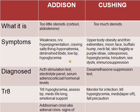Symptoms of Cushing — too much steroids — are upper body obesity with thin extremities, moon face, buffalo hump, and neck fat. The skin is going to be fragile with purple striae, osteoporosis, hyperglycemia, hirsutism, sexual dysfunction, and immunosuppression. A hint: with Cushing, everything goes up — steroids, sugar, sodium — and the skin is fragile.